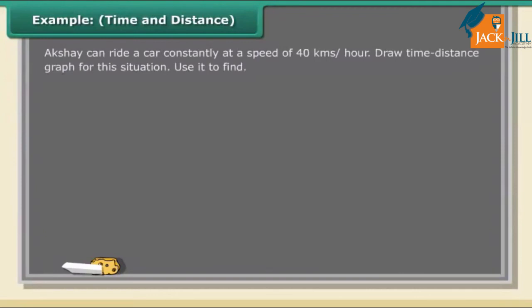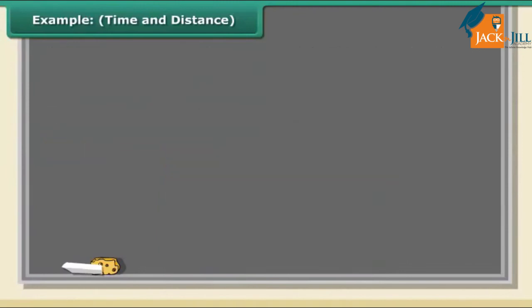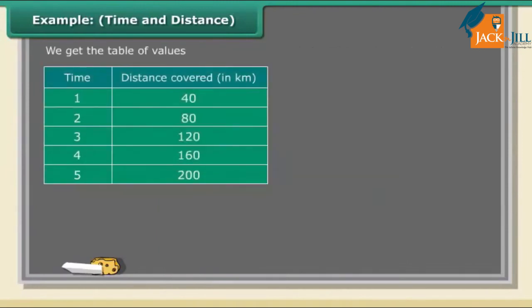Example - time and distance: Akshay can ride a car constantly at a speed of 40 kilometers per hour. Draw a time-distance graph for this situation. Use it to find: 1. Time taken by Akshay to cover 160 kilometers. 2. The distance covered by Akshay in 2.5 hours. We get the table of values. Scale: x-axis 1 unit equals 1 hour, y-axis 1 unit equals 40 kilometers. (a) Mark time on horizontal axis. (b) Mark distance on vertical axis.